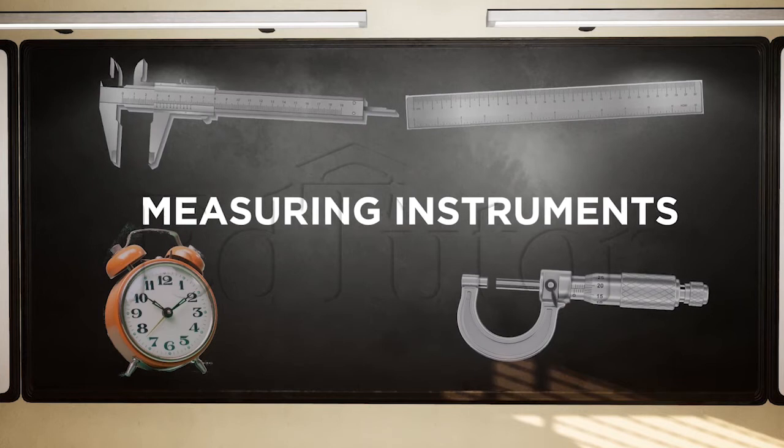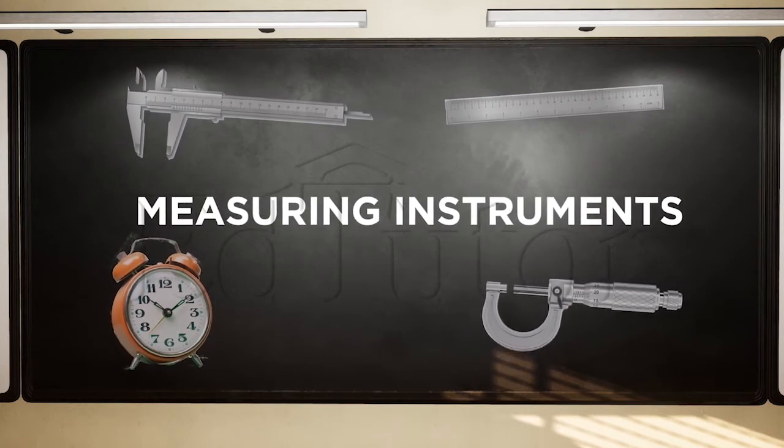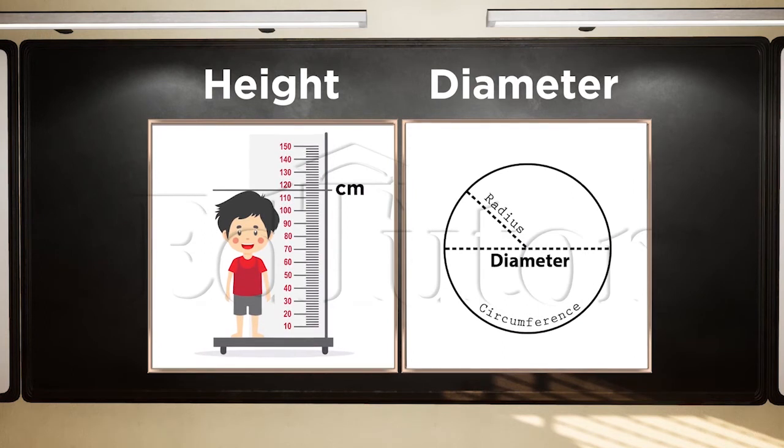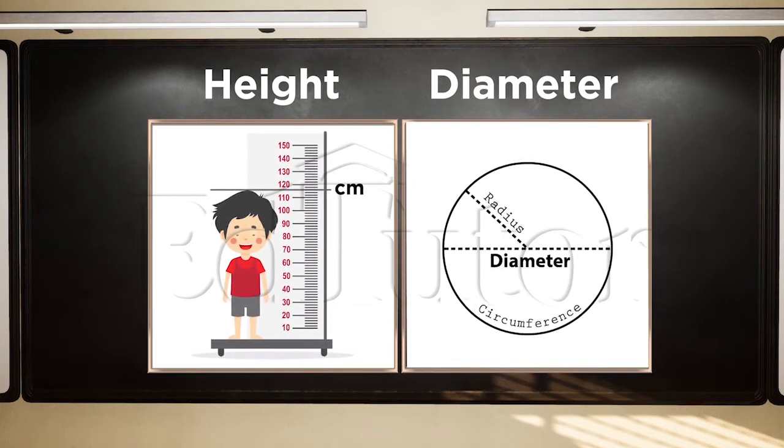The human senses are limited and not always reliable. To make up for that limitation, we need instruments for making accurate scientific measurements. When you measure the height or the diameter, you are actually measuring the length, which is the distance between two points.